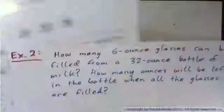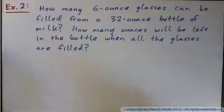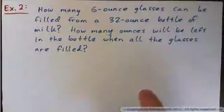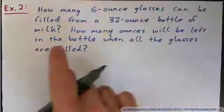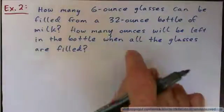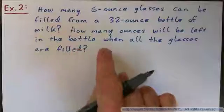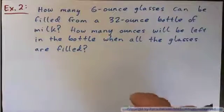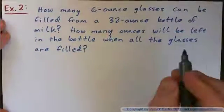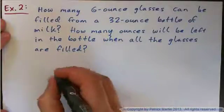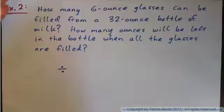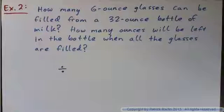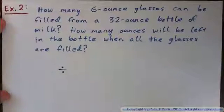Example 2: How many 6-ounce glasses can be filled from a 32-ounce bottle of milk? You don't have to write these sentences out — just read it and get the answer. How many ounces will be left in the bottle when all the glasses are filled? You have to use division — see if you can write out a division for this real-life example.